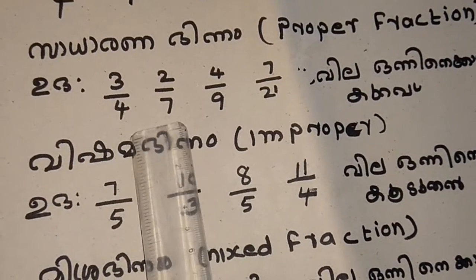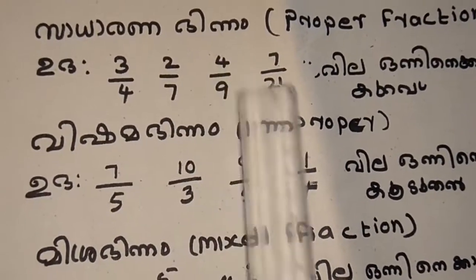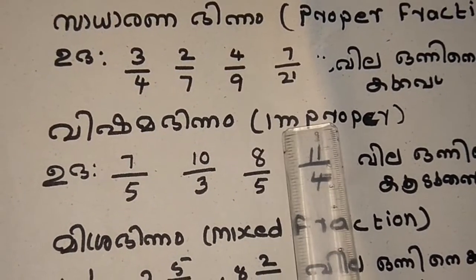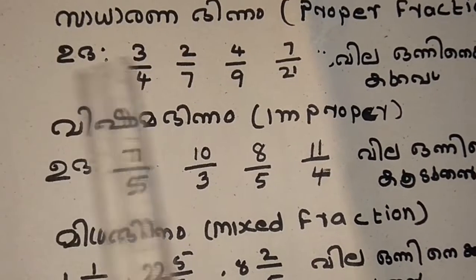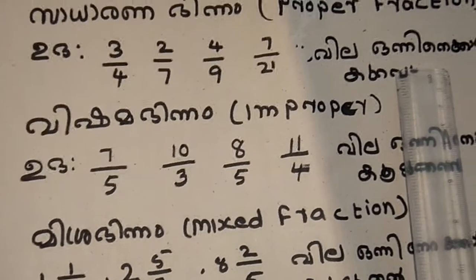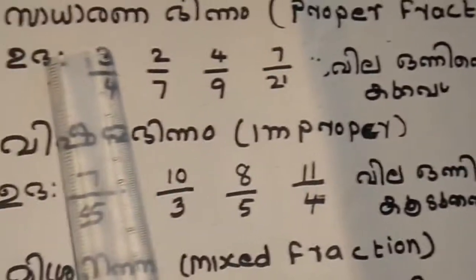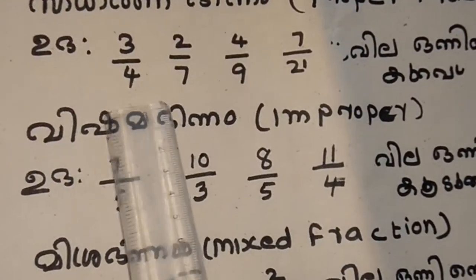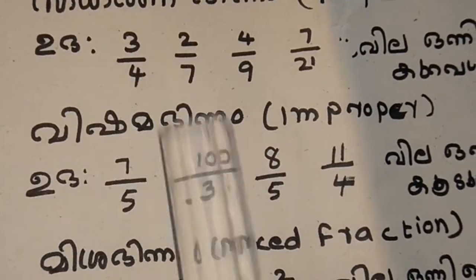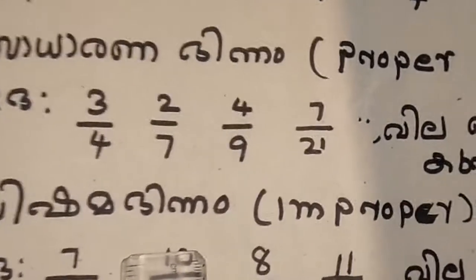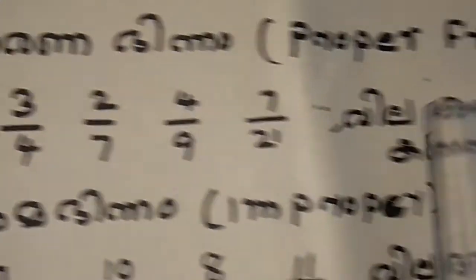3 by 4, 2 by 7, 4 by 9, 7 by 24. Any yugathil ull sankhya klana? Proper fraction. Amsham charuthu chayadam varuthu. Numerator is less than denominator. Or proper fraction.